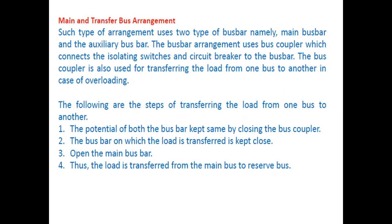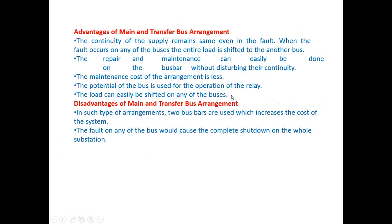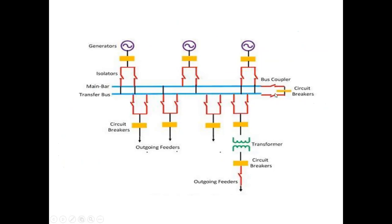The next type is the main and transfer bus scheme, which is an alternative to the double bus bar scheme. Two buses are used: one main bus bar and one transfer bus. If any fault occurs or maintenance needs to be done on the main bus, a bus coupler connects the transfer bus. Outgoing feeders are then connected to the transfer bus. Circuit breakers and isolator switches connect the incoming and outgoing feeders between the two buses.